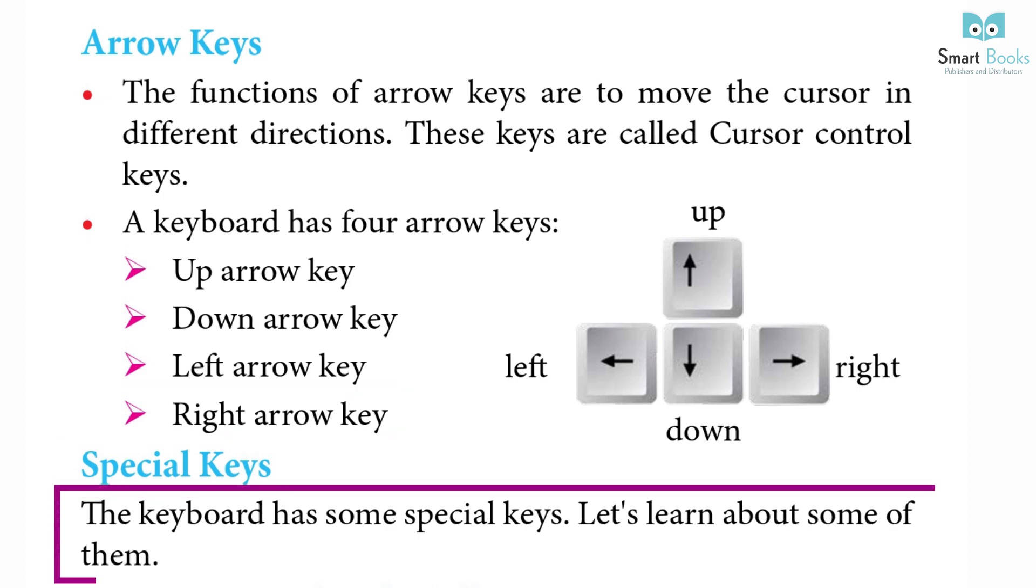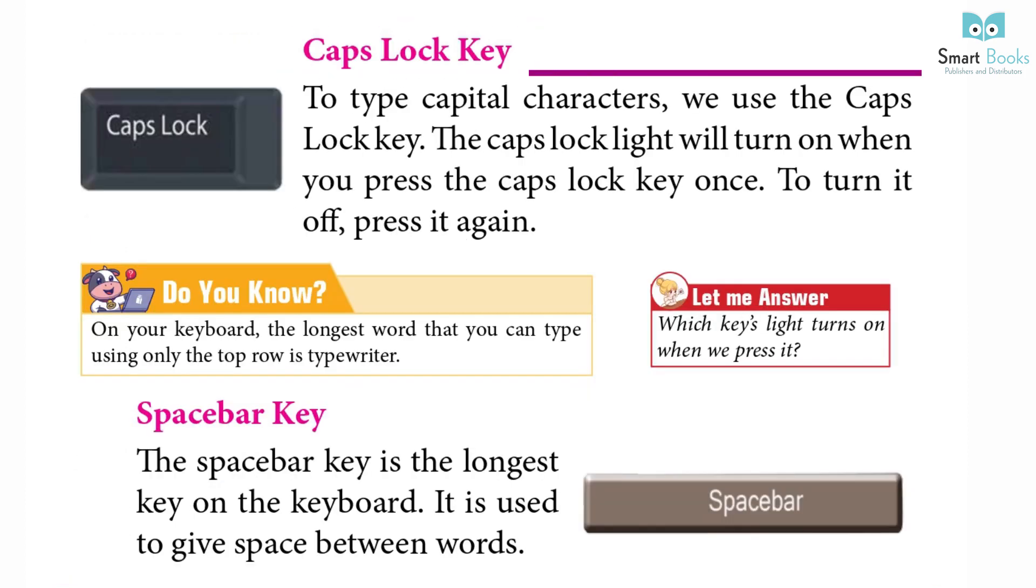Special keys: The keyboard has some special keys. Let's learn about some of them. Caps lock key: To type capital characters, we use the caps lock key. The caps lock light will turn on when you press the caps lock key once. To turn it off, press it again. Do you know? On your keyboard, the longest word that you can type using only the top row is typewriter. Let me answer: Which keys light turns on when we press it?